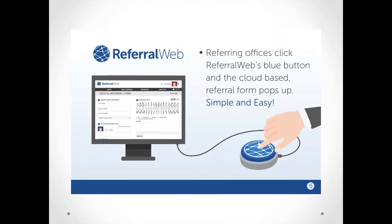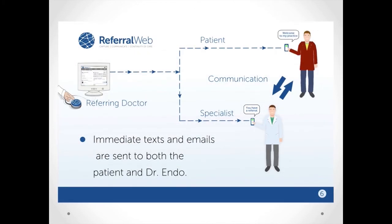ReferralWeb is easy to use and very efficient. The referring office logs into ReferralWeb.com or clicks on the ReferralWeb blue button and fills out a very simple referral form. This includes the patient's name and details of the required treatment, including x-rays, radiographs, and any other relevant files associated with that patient. Once all the patient information is filled out, the referring office hits Send, and that's when the magic happens. The referred office and the patient receive an instant email and text message notifying them that the referral has been sent. For the patient, this includes contact information and driving directions to the specialist's office. The specialist receives the patient information so that they can proactively reach out to the patient and set up the appointment.